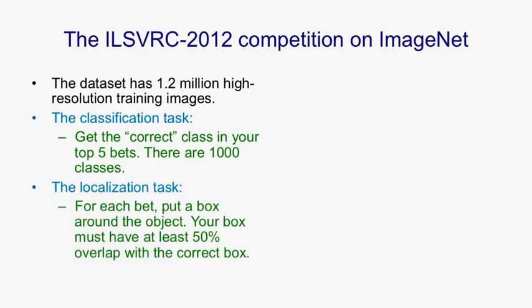There's also a localisation task. The reason for it is that many computer vision systems use a bag-of-features approach — for the whole image or a quadrant of the image, they know what the features are but not where they are. This allows them to recognise objects without knowing exactly where they are.